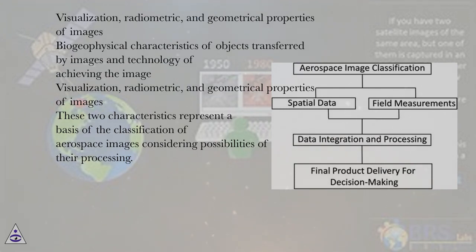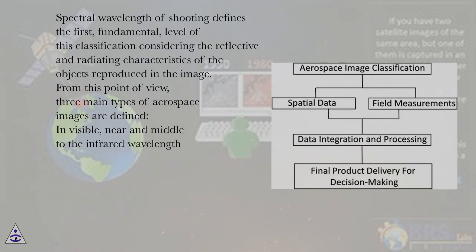These two characteristics represent a basis of the classification of aerospace images considering possibilities of their processing. Spectral wavelength of shooting defines the first, fundamental, level of this classification, considering the reflective and radiating characteristics of the objects reproduced in the image.